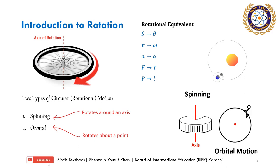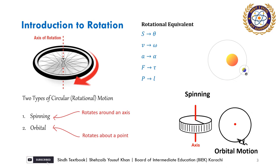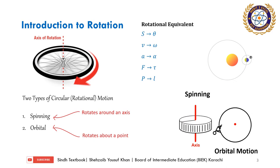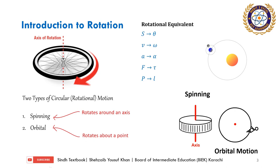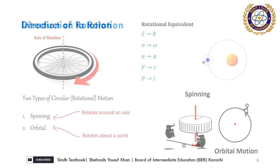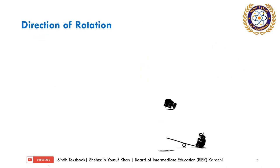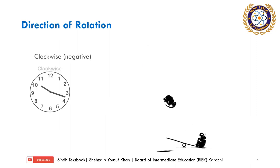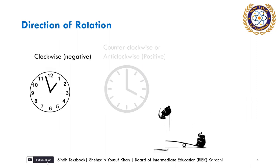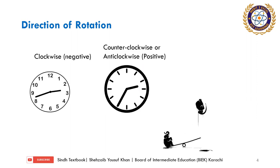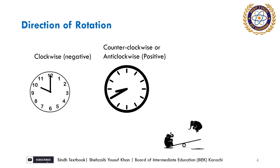In the same way, we will find the turning effect of force, which we call torque. And the rotational effect of motion, which represents the rotation analog of linear momentum, we call angular momentum. The direction of rotation is observed in two ways: clockwise or anticlockwise — anticlockwise is also called counter-clockwise.